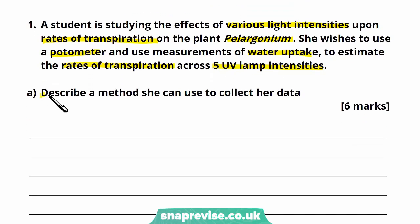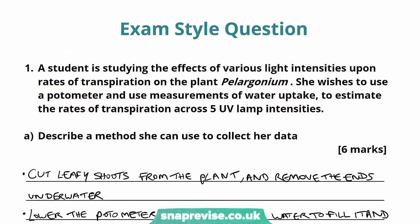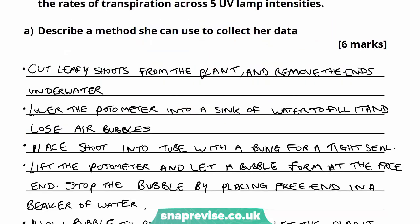Part A says describe a method she can use to collect her data and it's about six marks. We're going to have to give quite an in-depth method. With all of these types of method questions, if you think about from square one — setting up, gathering equipment, putting it all together, and then how you record — it makes it a lot easier to tackle the question from beginning to end. You can number them, use bullet points, or write a continuous paragraph — whatever works for you.